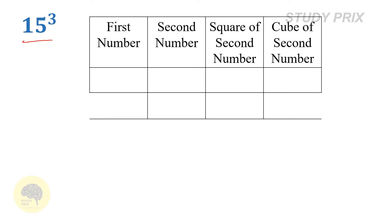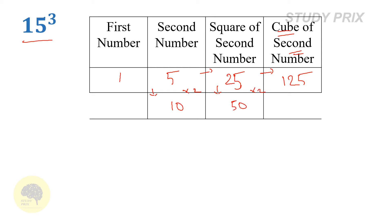Let's run another question to understand Type 1 more clearly. The problem is to find the cube of 15. Write the first number 1 and second number 5 in the table. In the third column, write the square of the second number: square of 5 is 25. In the fourth column, write the cube of the second number: cube of 5 is 125. In the two middle cells, write double the upper number.